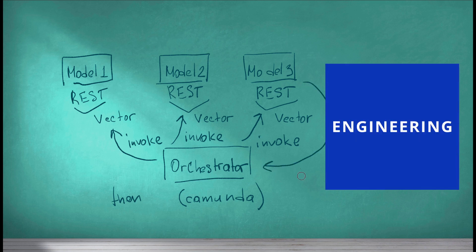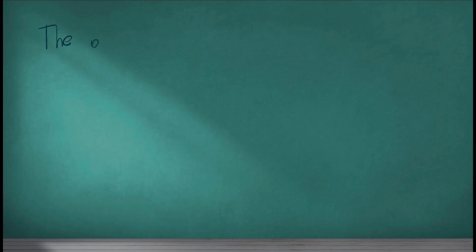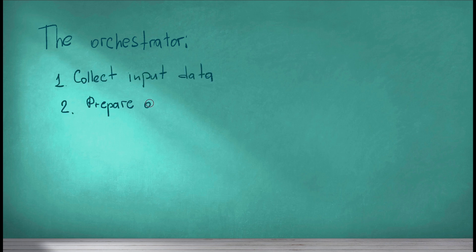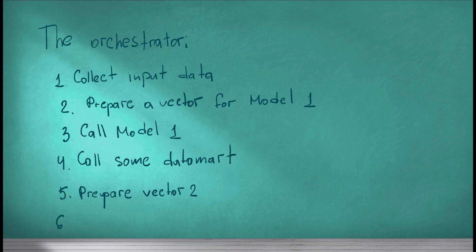Before the first model is called, the orchestrator has to collect and calculate an input vector. After the first model is called, the orchestrator can evaluate the output results, make decisions, enrich the process data model by calling external sources, and finally create an input vector for the next model.